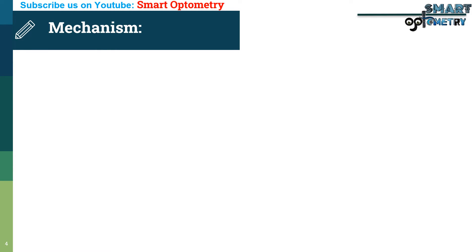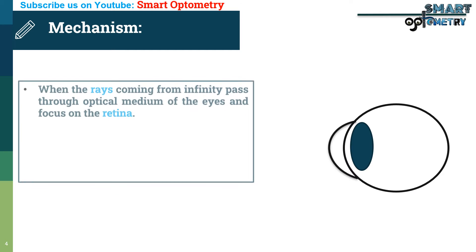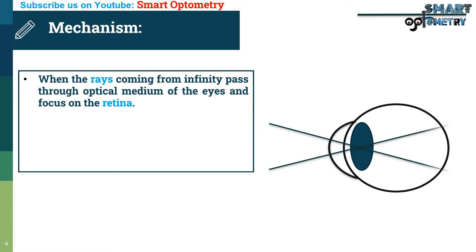Let's see the ray diagram of an emmetropic eye. When rays coming from infinity pass through the optical medium of the eye and focus on the retina. If we make this patient axially myopic, then the position of the retina will be away from the original retina, somewhere here. If we make this patient hyperopic, then the position of the retina will be in front of the original retina, somewhere here.